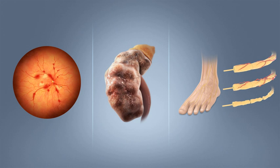If left untreated, diabetes can cause many complications. Acute complications can include diabetic ketoacidosis, hyperosmolar hyperglycemic state, or death. Serious long-term complications include cardiovascular disease, stroke, chronic kidney disease, foot ulcers, and damage to the eyes.